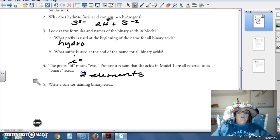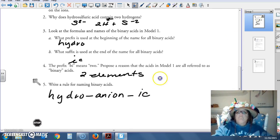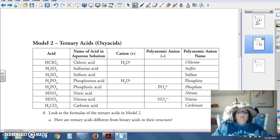Write a rule for naming binary acids. Hydro, then the anion, and then you drop the ide and put ic on.